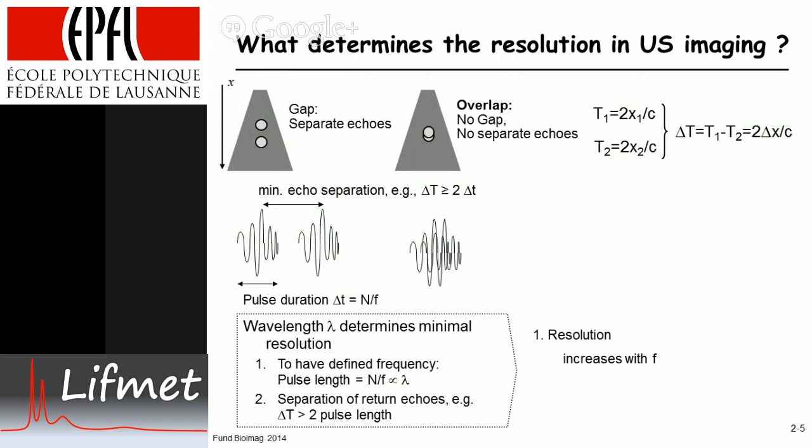The conclusion is that resolution increases with frequency. As frequency increases, one can reduce the duration of the pulse; if the pulse duration decreases, the Delta T separation between the two echoes can decrease as well. Think of it as two delta distributions — if you could have infinitely sharp pulses, you'd have infinitely high spatial resolution. Conversely, if frequency is lower, pulse duration must get longer, and the minimum echo separation Delta T must increase. So resolution increases with increasing frequency.